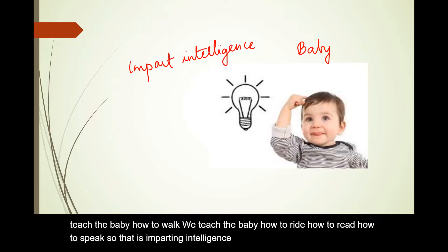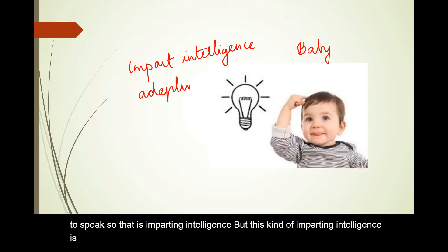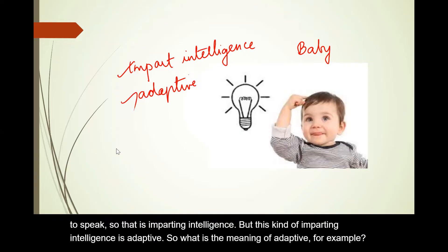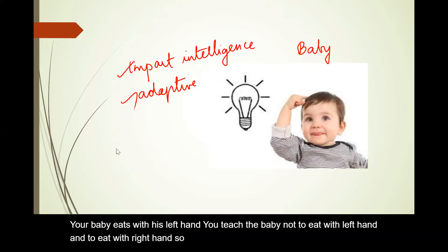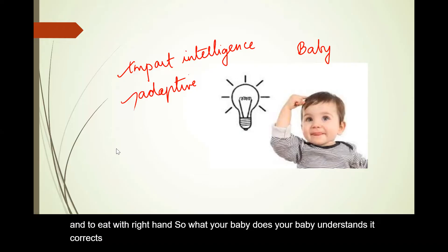This kind of imparting intelligence is adaptive. What is the meaning of adaptive? For example, your baby eats with his left hand. You teach the baby not to eat with the left hand and to eat with the right hand. Your baby understands, it corrects the mistake, and starts eating with the right hand. This is called adaptive.